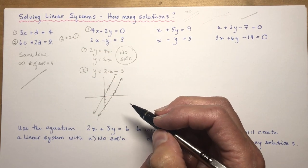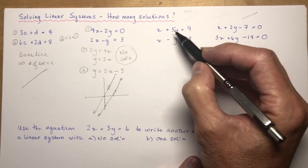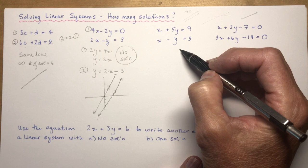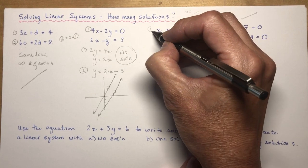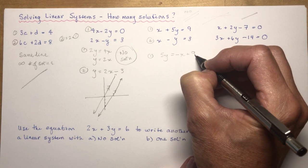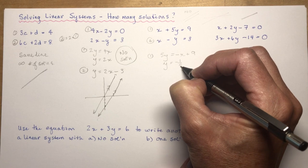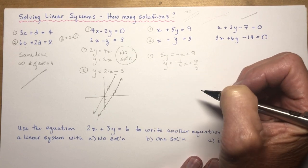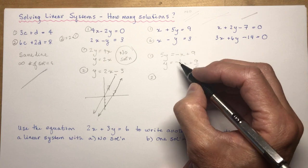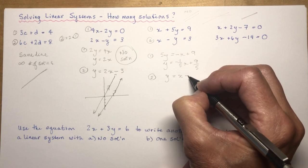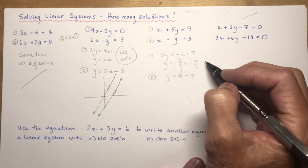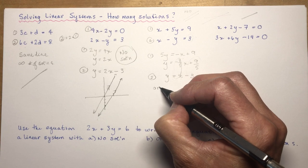So that's no solution. Now for the next system: x + 5y = 9 and x - y = 3. These are not multiples of one another, so putting them into y = mx + b format: equation 1 becomes 5y = -x + 9, so y = -1/5 x + 9/5. Equation 2 becomes y = x - 3. These have different slopes and different y-intercepts, so there is one solution.